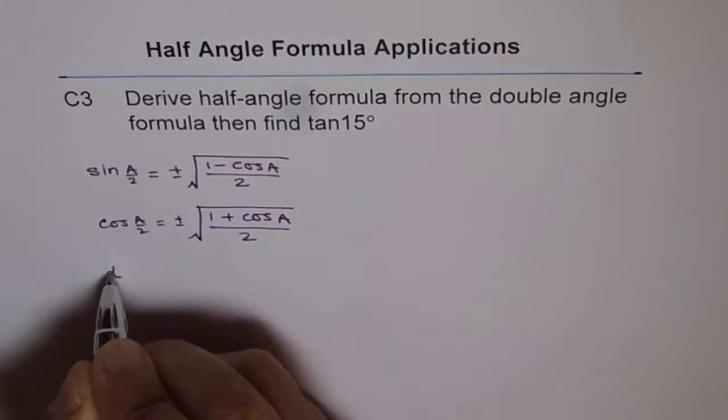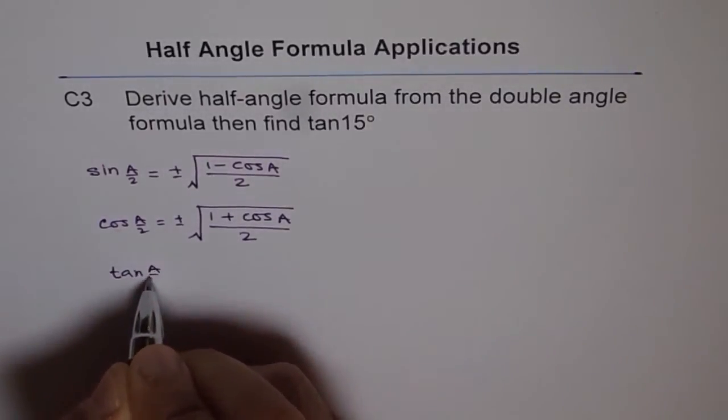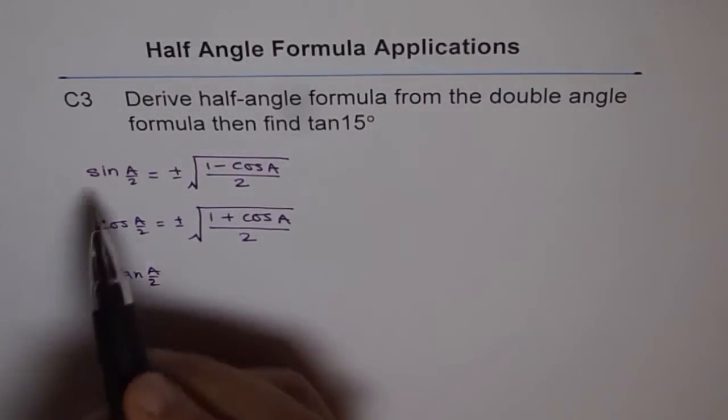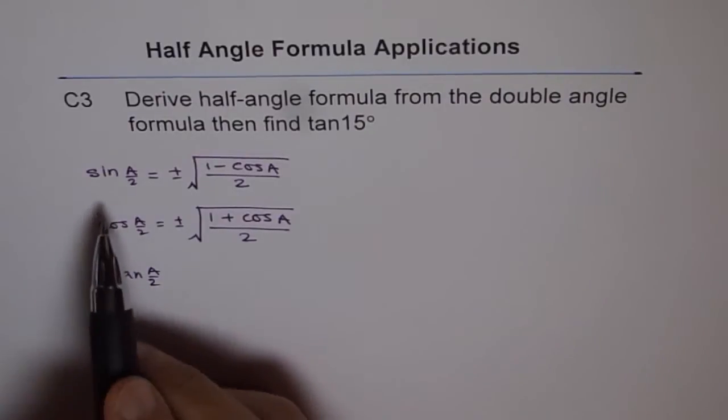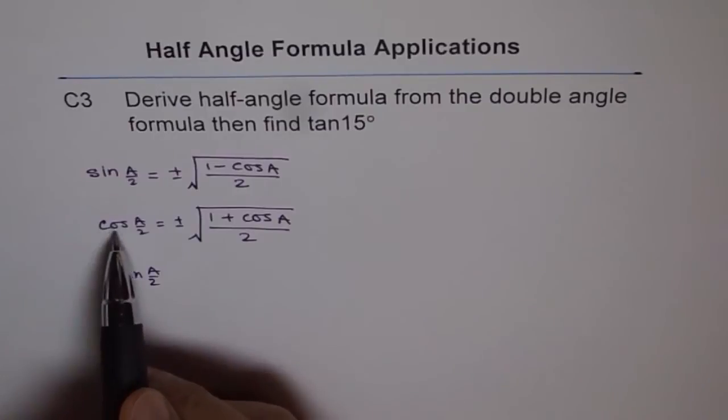And cos of a by 2 is equals to plus minus square root of 1 plus cos a by 2. Tan a by 2, therefore, will be ratio of the above 2. Because tan is sine over cos. So, tan a by 2 is sine a by 2 divided by cos a by 2.